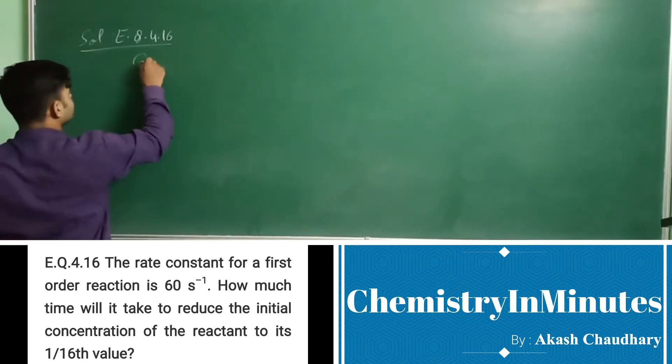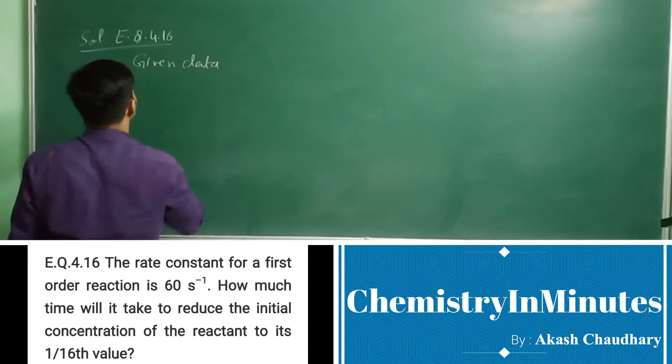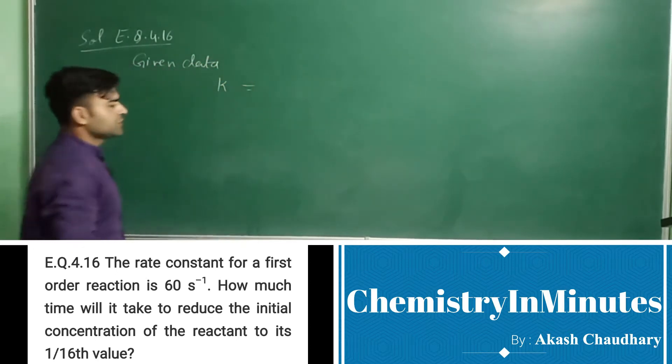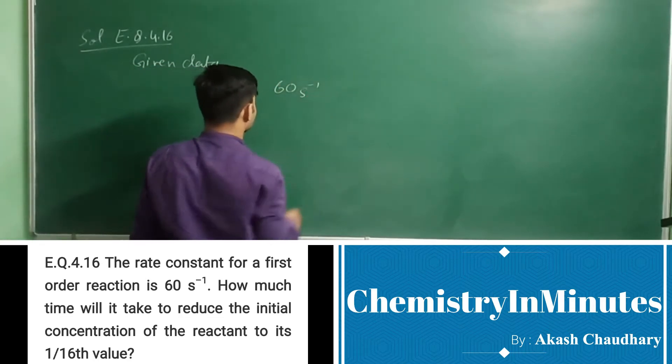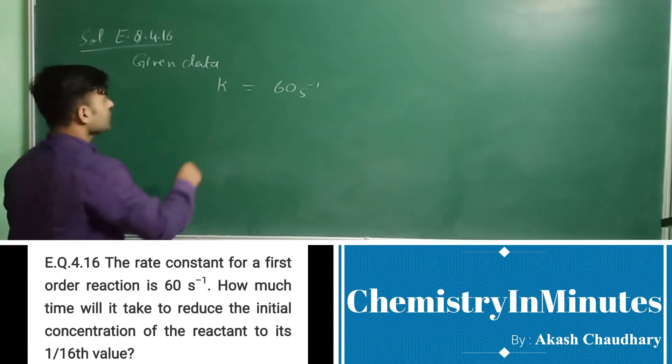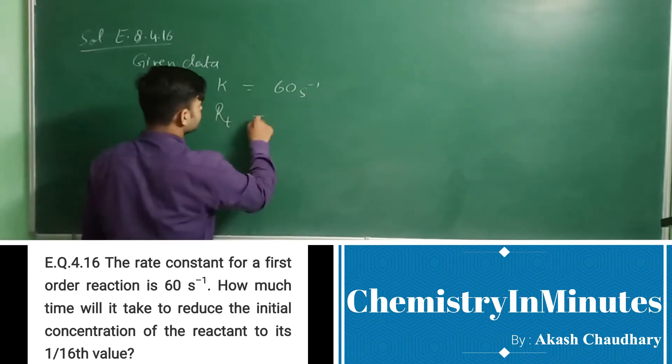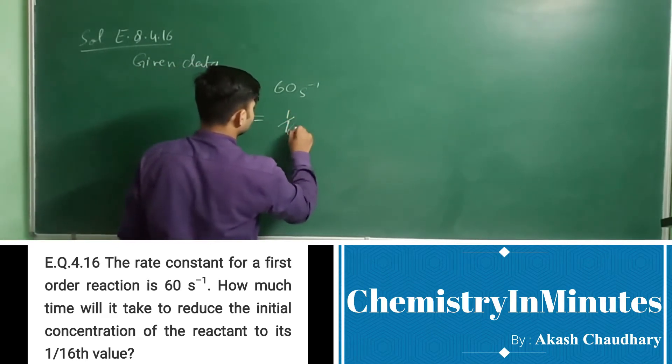First we will write the given data. So k, the rate constant, is given as 60 second inverse. r at time t is given as 1 upon 16th r0.